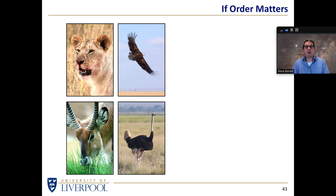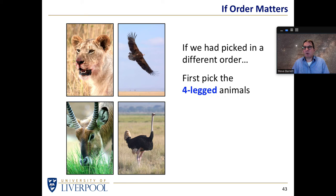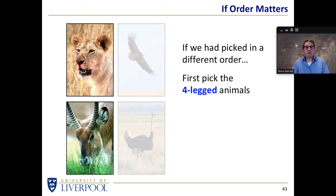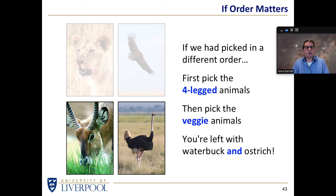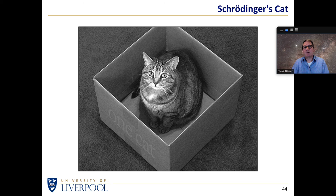Had we chosen a different order — picking four-legged animals first, giving lion and waterbuck, then choosing vegetarians from those — we'd expect the waterbuck, but we find we're left with the waterbuck and the ostrich. The second measurement of vegetarian state has scrambled our previous knowledge that the animal had four legs. This doesn't work that way in the macroscopic world, but that is precisely how things happen in the quantum mechanical world of the very, very small. You have to throw away your prejudice and your common sense in order to make sense of quantum mechanics.